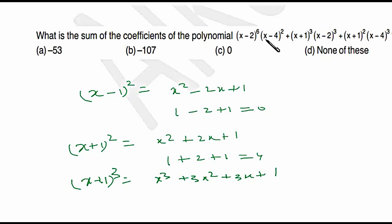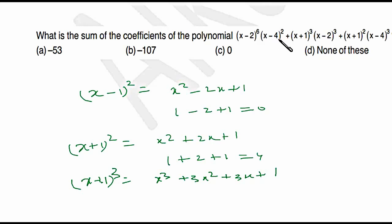Now, put x = 1 in the given expression carefully. (x − 1) becomes (1 − 2) = −1, raised to 6, which gives +1. Then (1 − 4)² = (−3)² = 9.